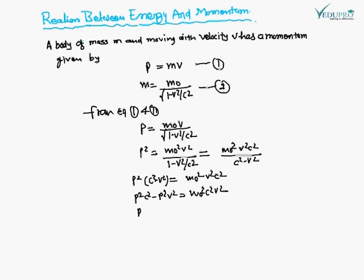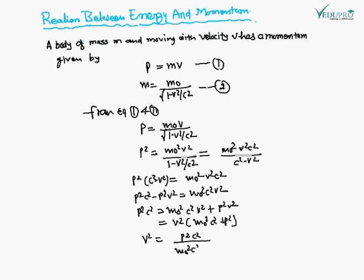Rearranging: p²c² = m₀²c²v² + p²v². Taking v² common from the right side: p²c² = v²(m₀²c² + p²). Therefore v² = p²c² / (m₀²c² + p²). This is equation number three.